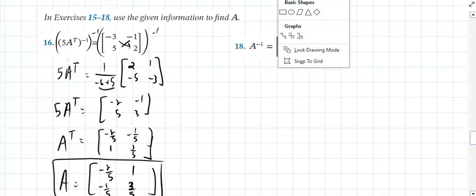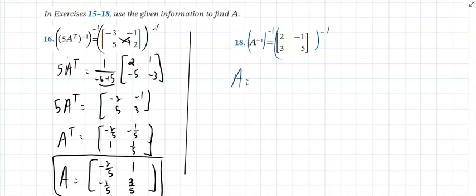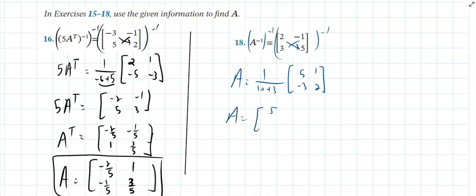For part B, the theorems tell us (A⁻¹)⁻¹ = A. So we take the inverse of the given matrix: determinant is 10 + 3 = 13. Swap diagonals and multiply off-diagonals by negative. This gives A = [5/13, 1/13; −3/13, 2/13].